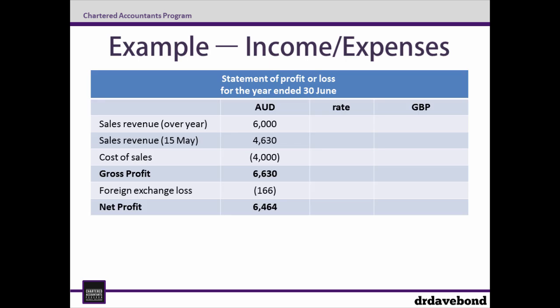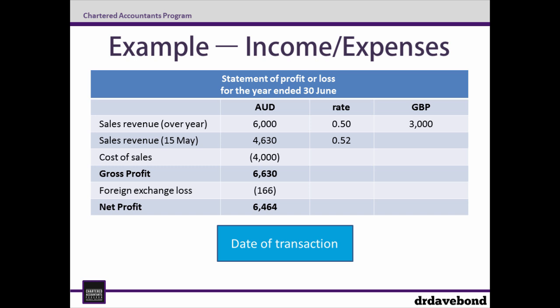We're starting with a statement of profit or loss, and for ease of explanation I've split out the two revenue items. It's then simply a matter of identifying which rate to use for the translation. As we're dealing with income and expense items, we're looking for either the rate on the date or an average rate. For revenue over the year, we use the average rate. For the one-off transaction on the 15th of May, we use the rate on the 15th of May, which is 0.52. Without other information, you can assume things like cost of sales happen evenly over the course of the year, so the average rate is used again.